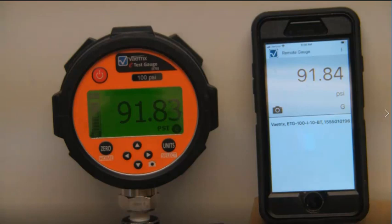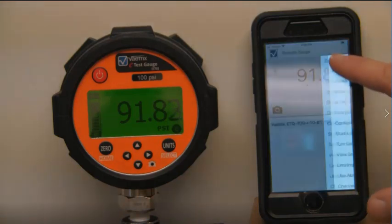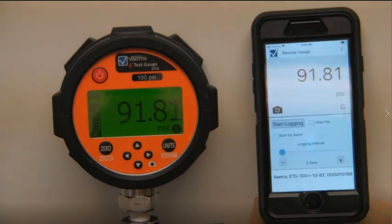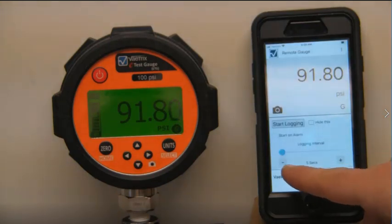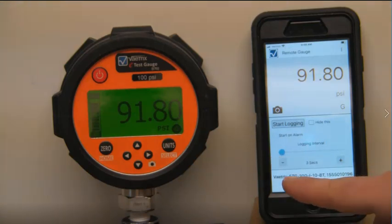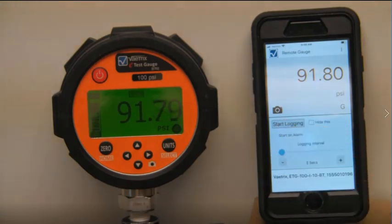So now we are displaying the live pressure reading from the gauge. To get a data logging session started, I am going to first check the settings. Right now I have it set to 5 seconds, I am going to turn it down to 3 seconds, and I am going to start logging.